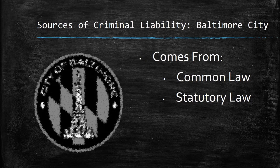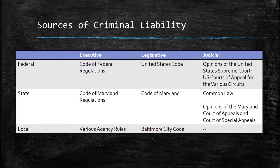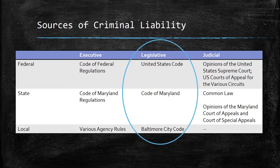Baltimore City does not have that rich tradition — there is no common law city crime. However, we do have Baltimore City ordinances and Baltimore City statutory law. Looking at the list of liability sources, you have executive regulations, legislative statutes, judicial opinions, and the common law. The only ones we really care about are legislative statutes and the common law — those are the only two sources of criminal law. Judicial opinions and executive regulations impact the criminal justice system, but if we're talking about what is against the law, the sources are statutes and the common law.